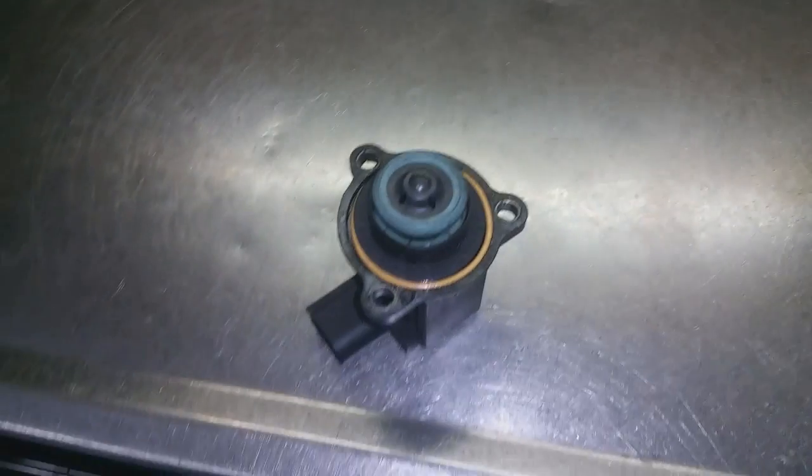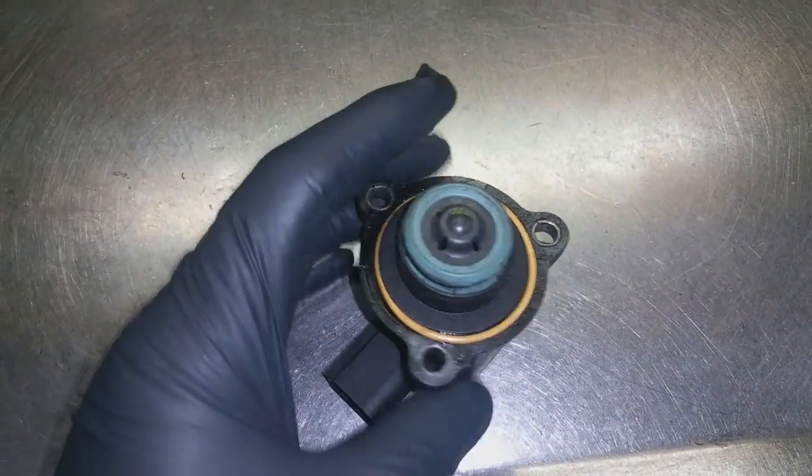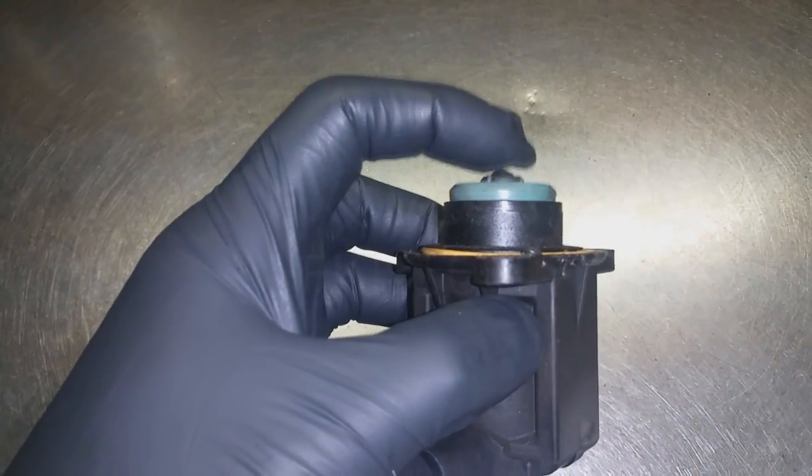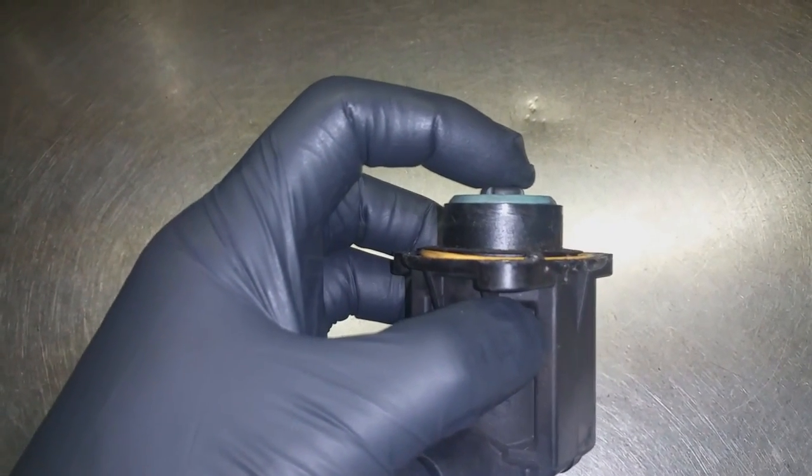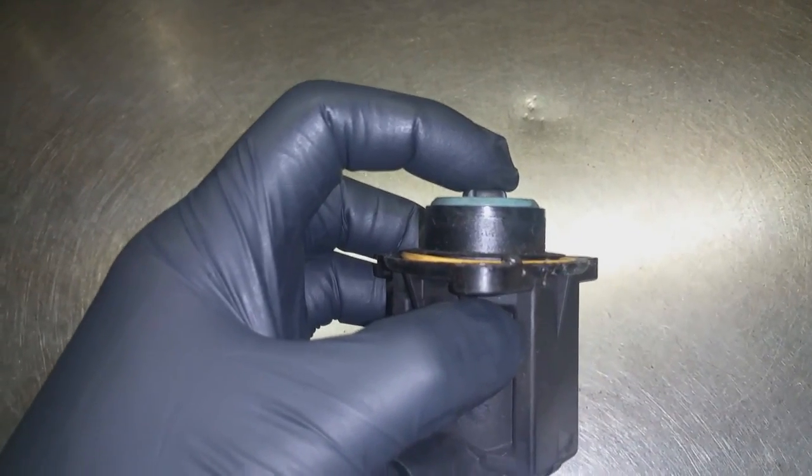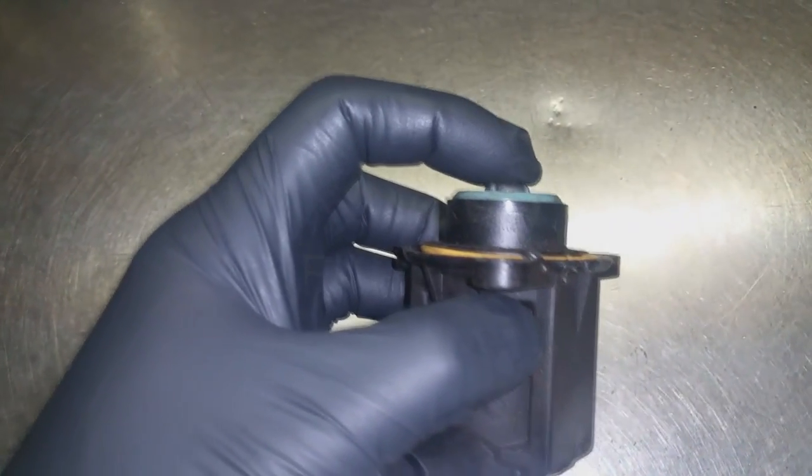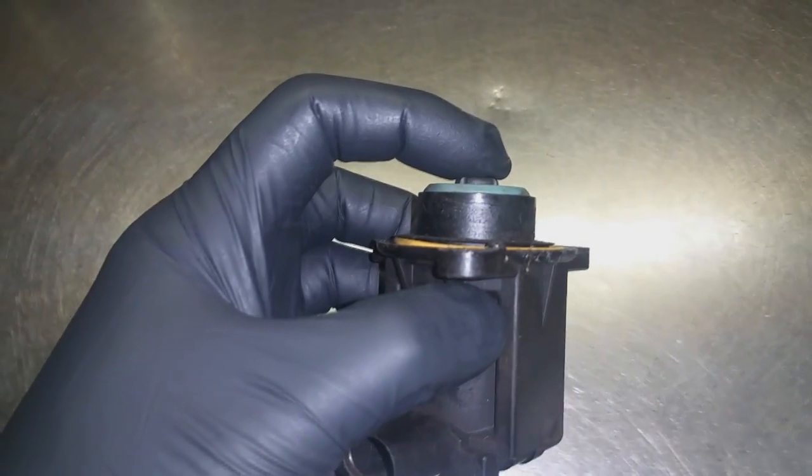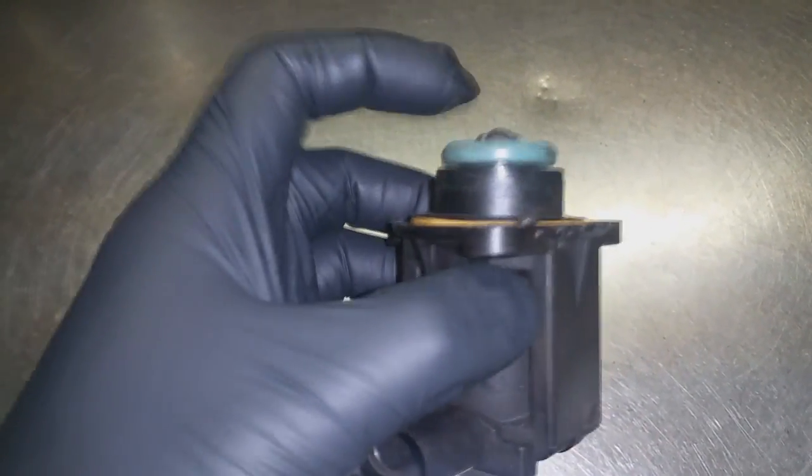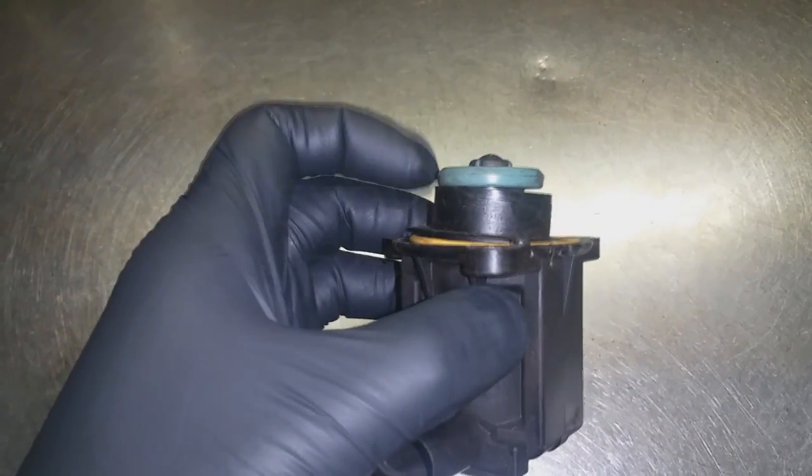I failed to clarify how the boost is getting back into the turbo. I did mention that when the plunger retracts, boost is vented back into the turbo intake, and that's how the system recirculates boost when the throttle is closed. But when it's not energized, it's supposed to seal off.